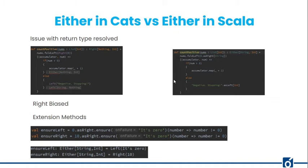The other advantage is that Either in CAT's library is right-biased, meaning every method will be directly applied to the Right value rather than the Left value. Either in Scala is also right-biased, but if you are using Scala version 2.11 or earlier, it is not right-biased and you have to manually extract the Right value before applying functions — which adds extra code.